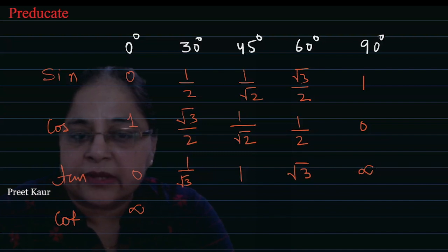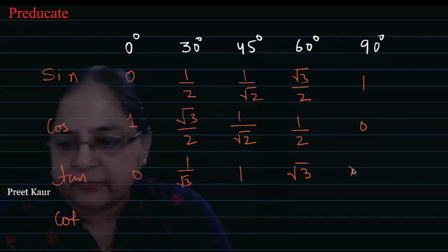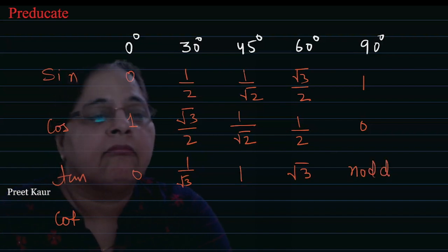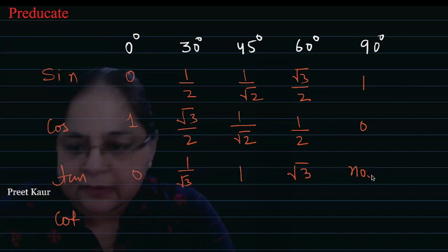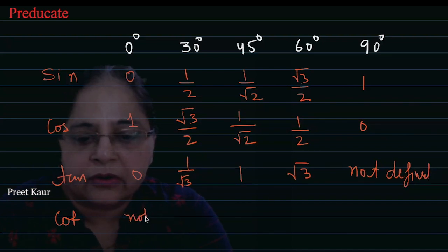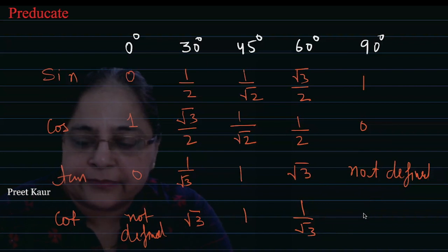Cot 30 is root 3. Cot 45 is 1. Cot 60 is 1 upon root 3. And cot 90 will be 0. It's the complete reverse.